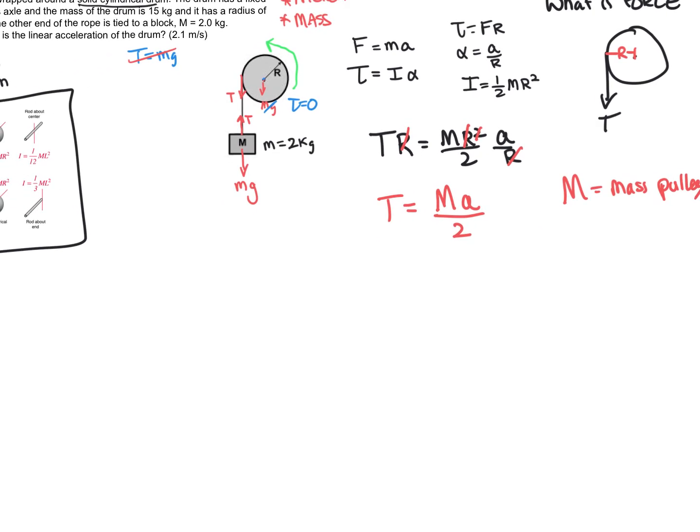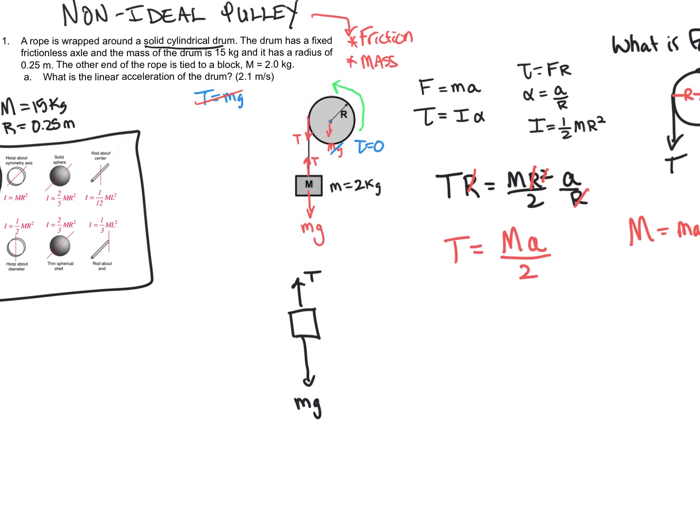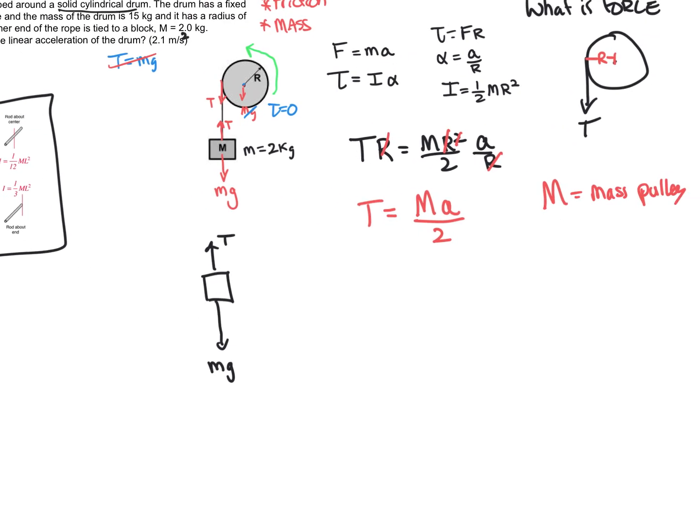So now we can look at this from a linear standpoint. So let's pull this block out. We got tension pulling up and we have mass of the block times gravity pulling down. So we now know what that tension is. We can now solve for our actual linear acceleration. So we have little m times gravity minus big M times a all over 2 equals the mass of that block which is little m times a.